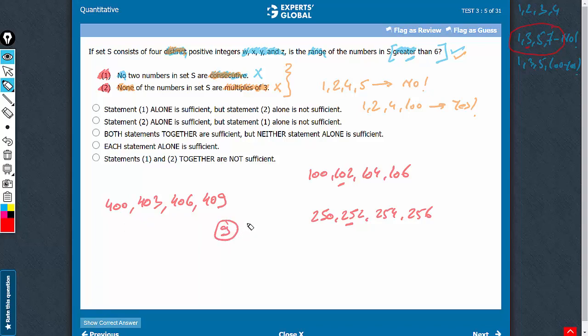You can try other combinations. Maybe in some cases you will get 8 or 7, but you will always get a range greater than 6. On combining, we can say that yes, combining works. We can no longer get a no. Yes is the only possible answer on combining, and therefore C is the correct answer choice.